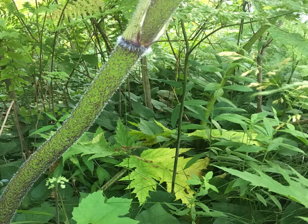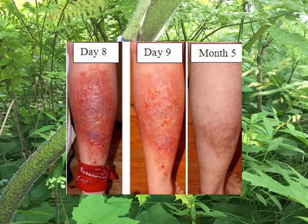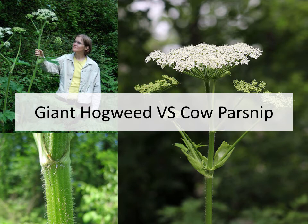The stem has coarse hairs and purple blotches. The hairs become a little more dense around the node, and the purple blotches are more dense towards the base of the stem. The oils from giant hogweed can cause photodermatitis, making the skin extremely sensitive to ultraviolet light and causing burns which can form up to 48 hours after contact. If the oils are in contact with your eyes, it can cause temporary or permanent blindness.